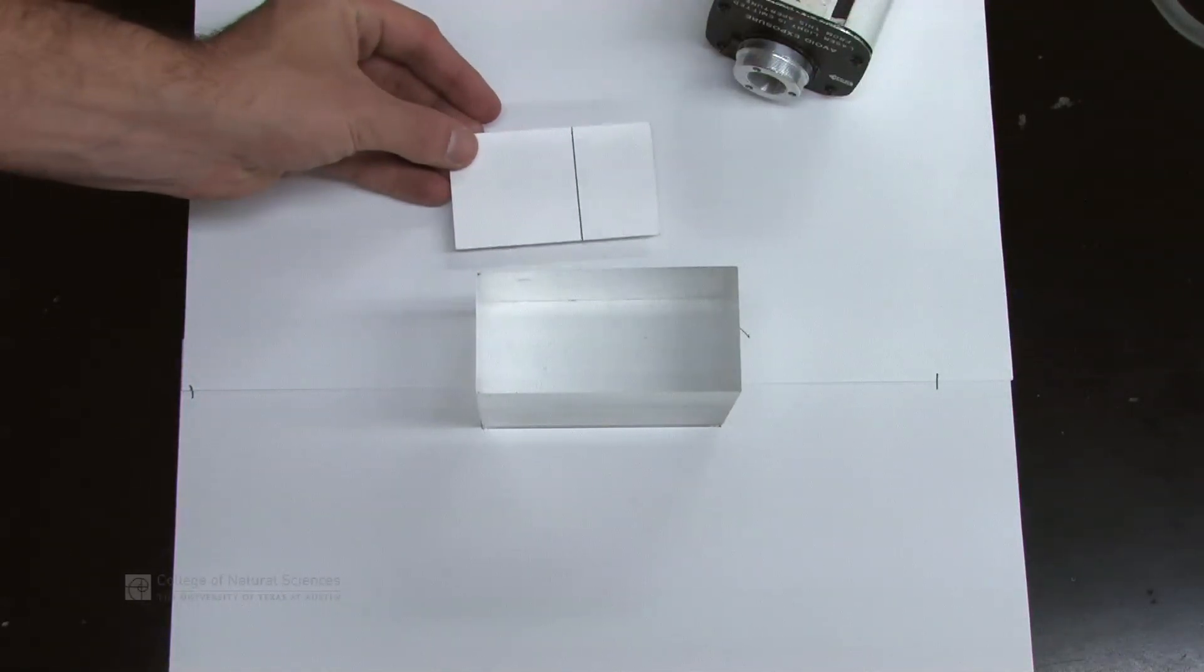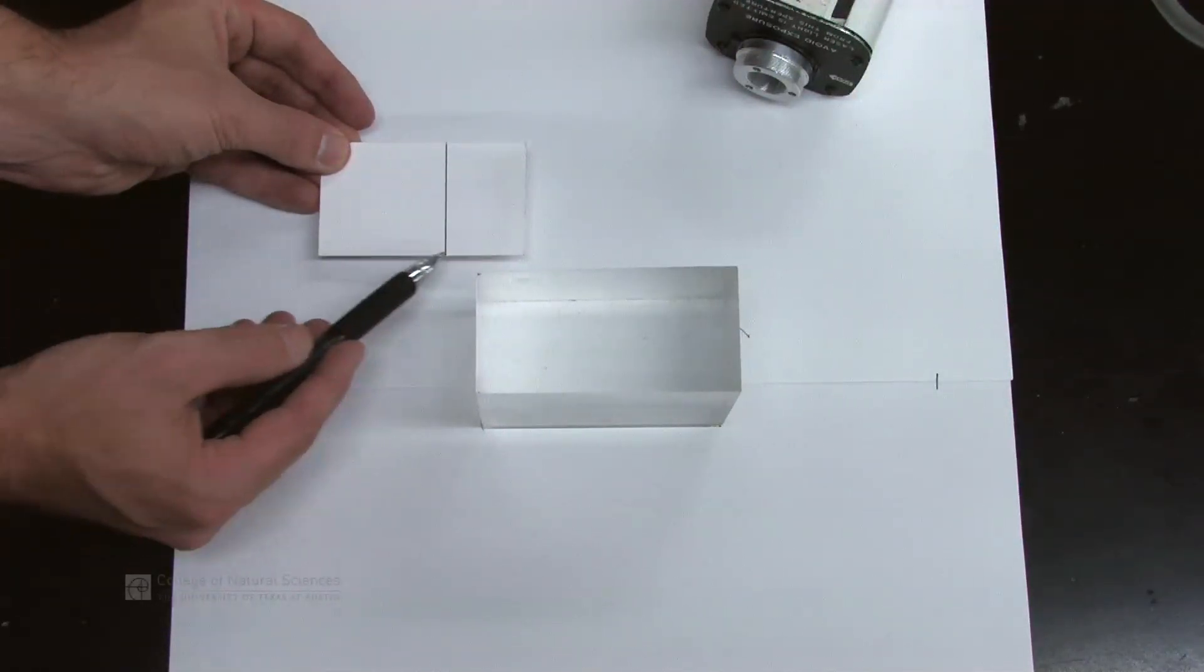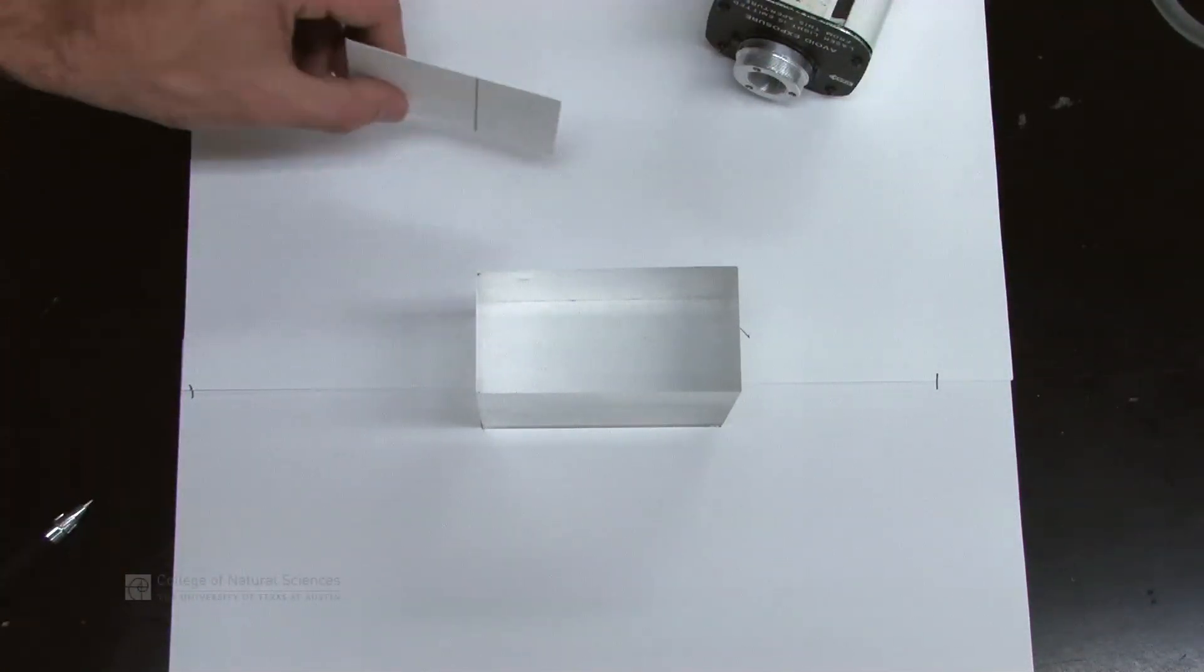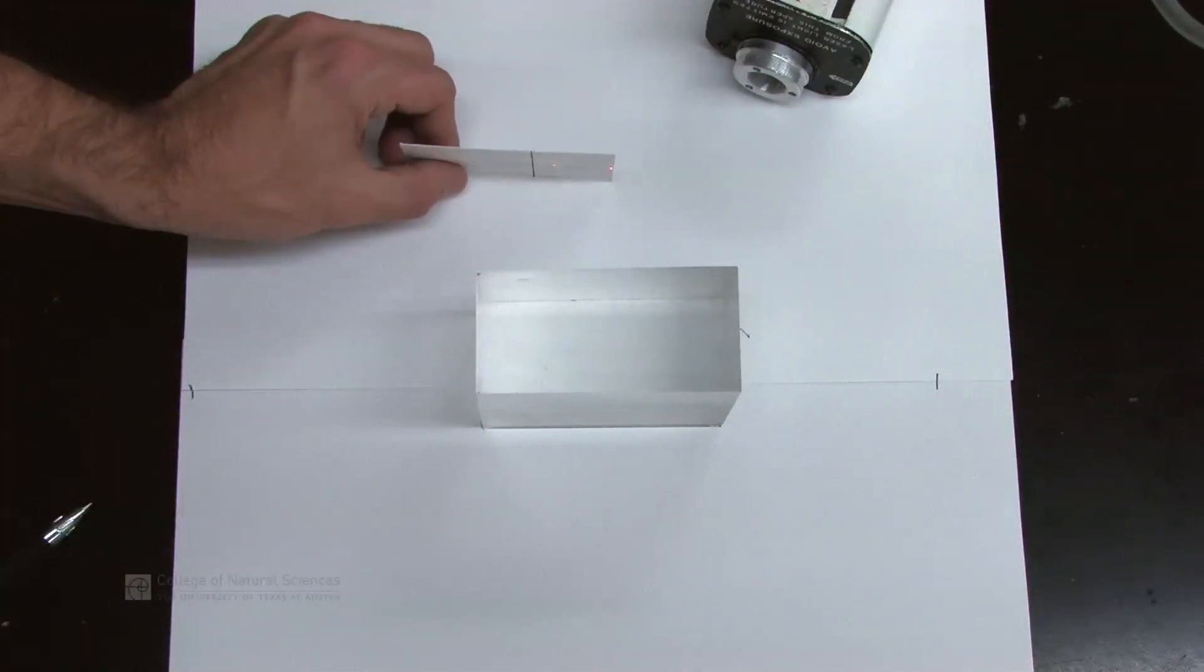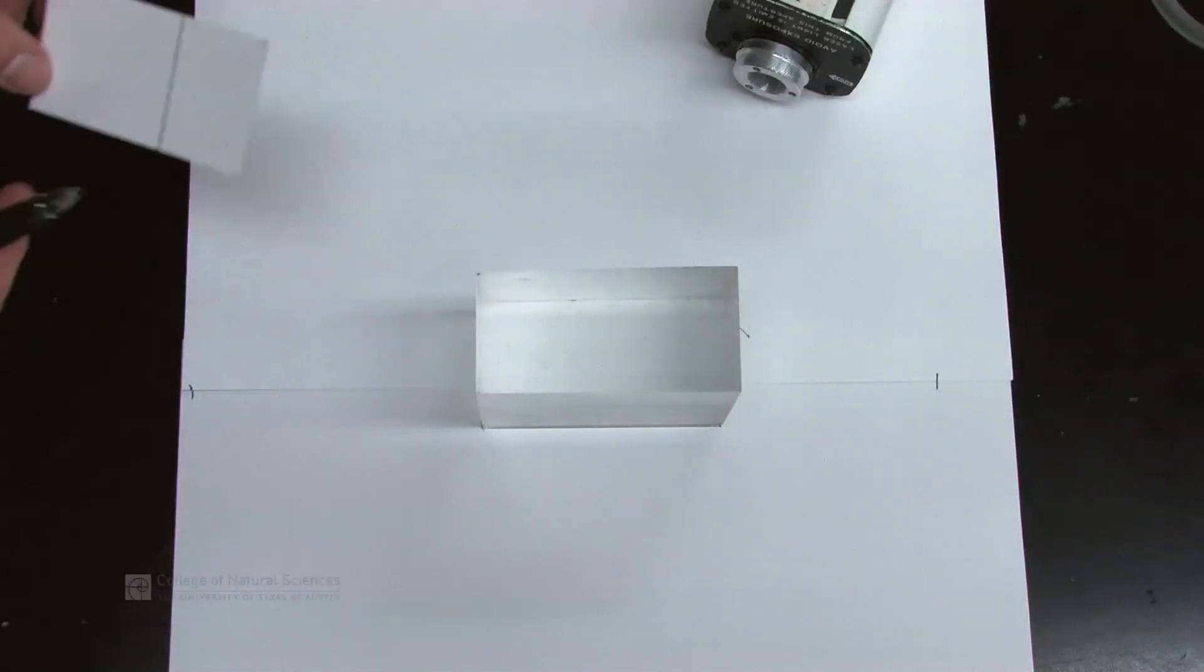Now you'll notice I have this business card that I drew a line on, and the line is perfectly perpendicular to this edge. So when I hold it up, this line is vertical. When you're completing this lab, you want to make sure that the business card or whatever you're using is perfectly straight up and down. If it's tilted slightly, your lines are going to be in the wrong spots.